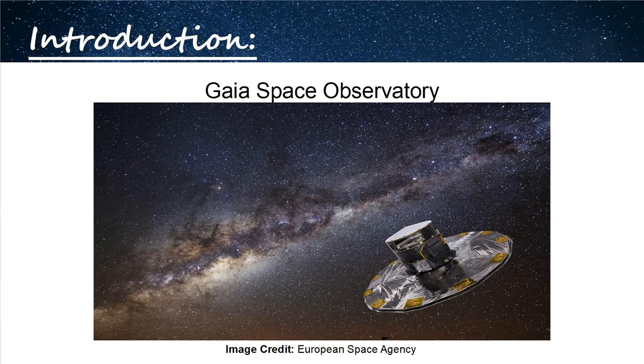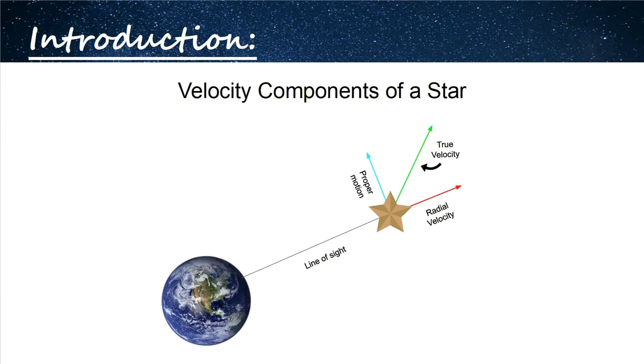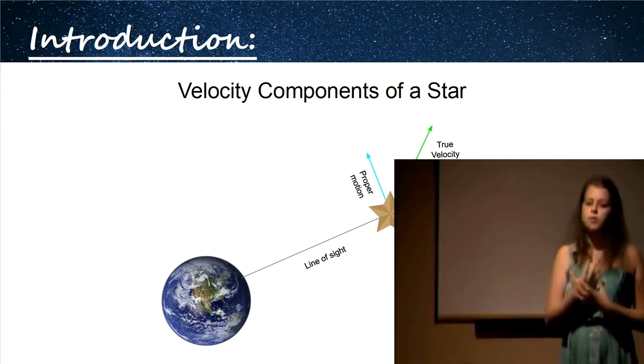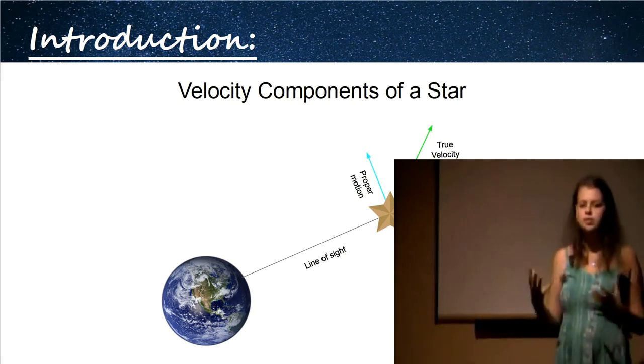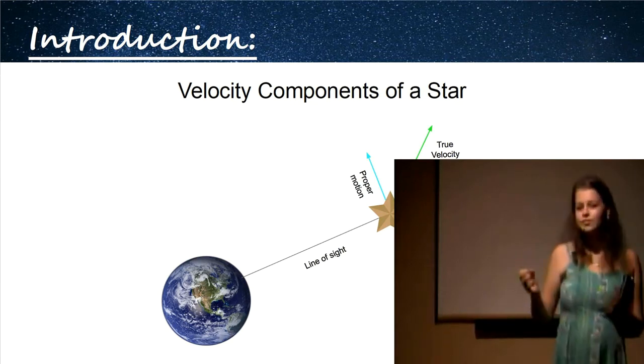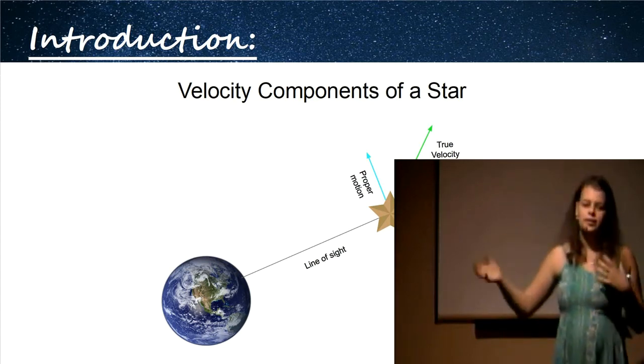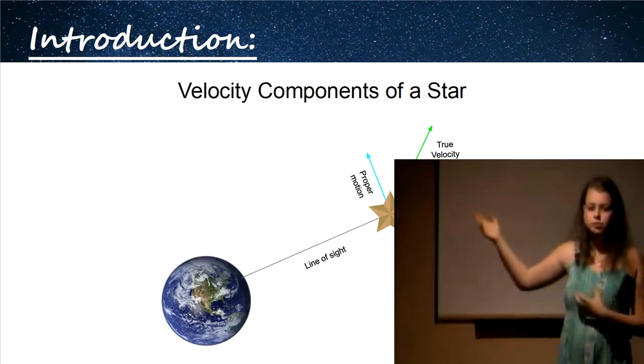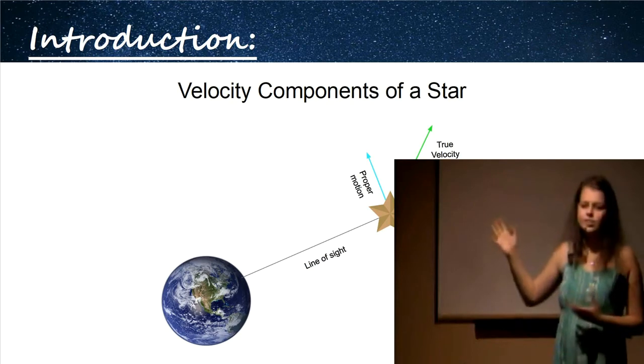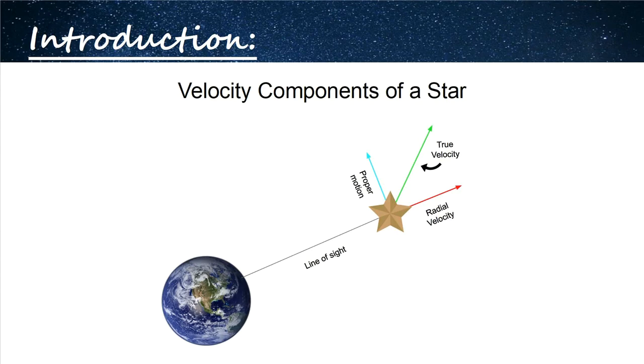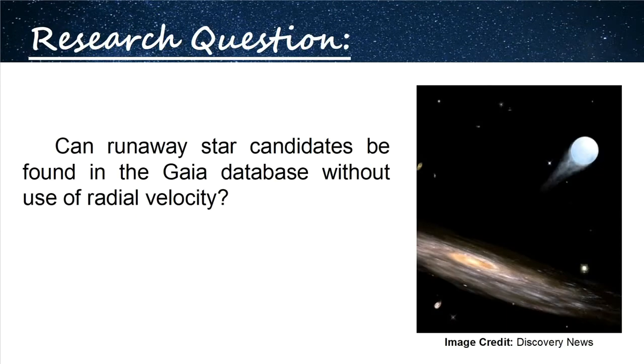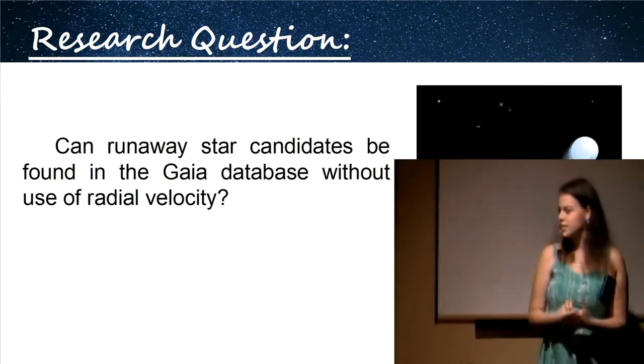And so it turns out my timing was pretty perfect because Gaia Space Observatory, which is sent by the European Space Agency, released their first of five total data releases in September 2016, when I just was starting this project. And probably a lot of you don't know what Gaia is, but basically their main mission is to create the largest, most precise maps of the galaxy to date. And so in order to do that, you need incredibly high position and motion calculations, which is perfect for identifying these speedy guys. So there is one limitation though. I knew I wanted to use this database, but let me run down what you usually need to find a true velocity of a star.